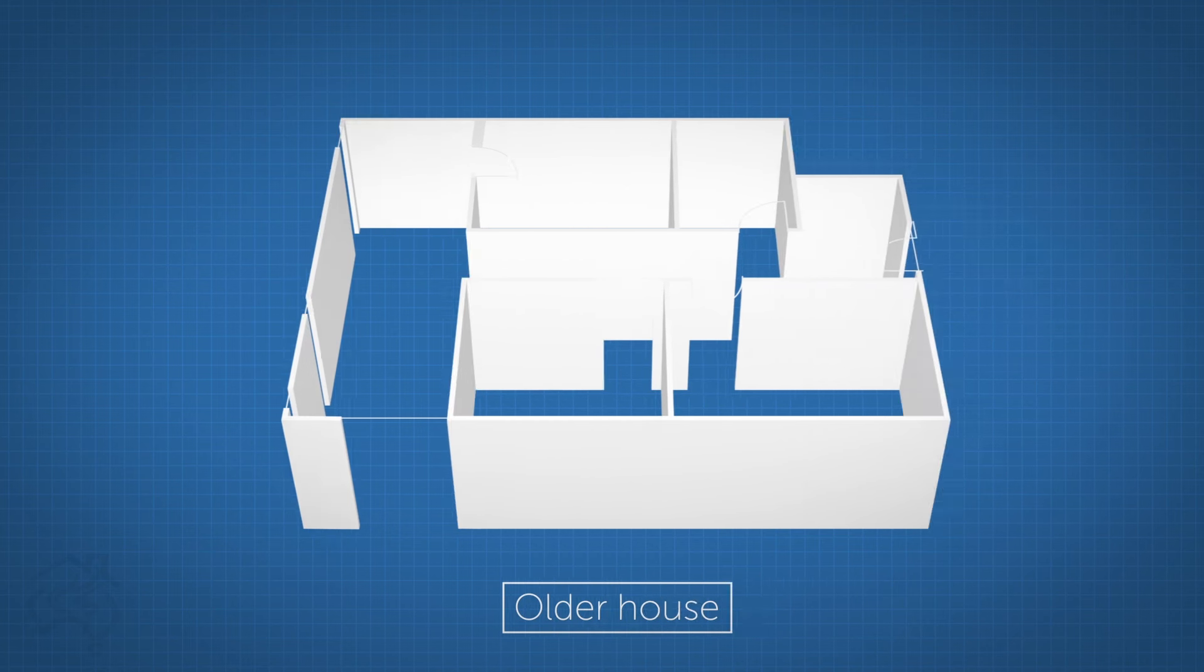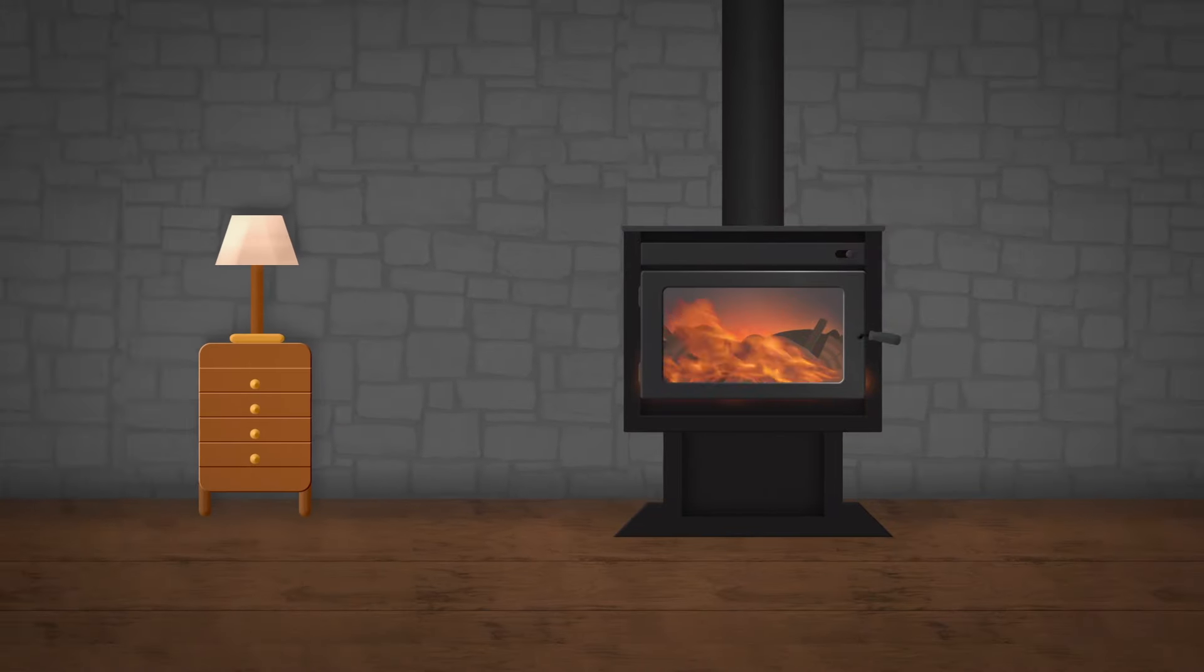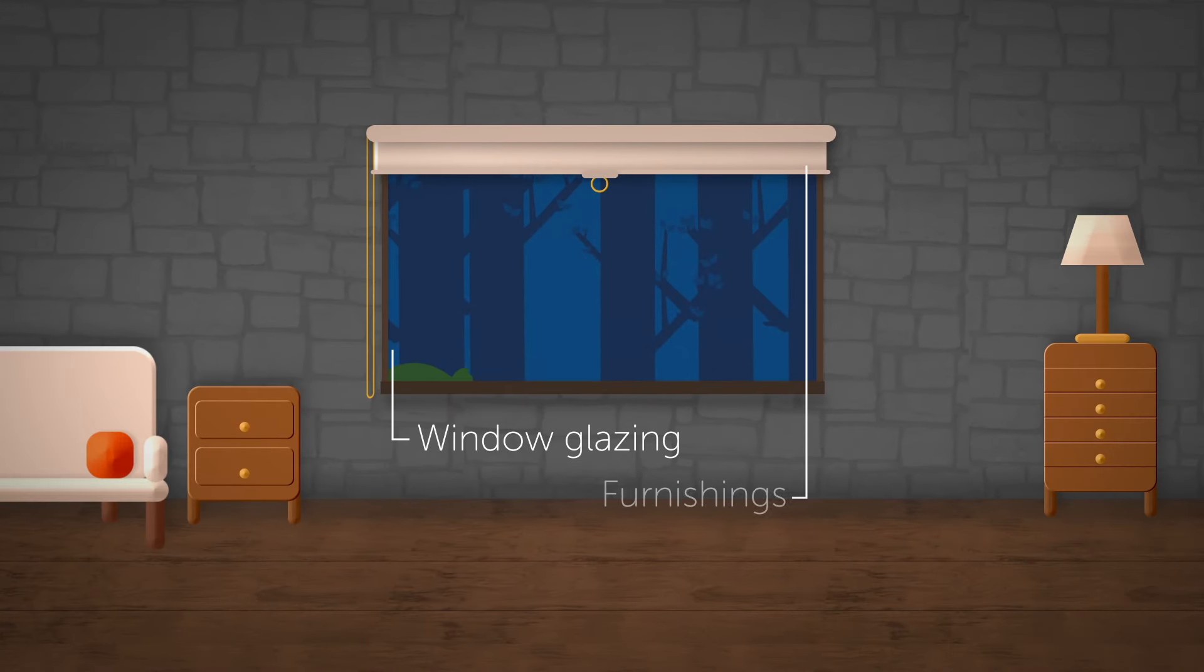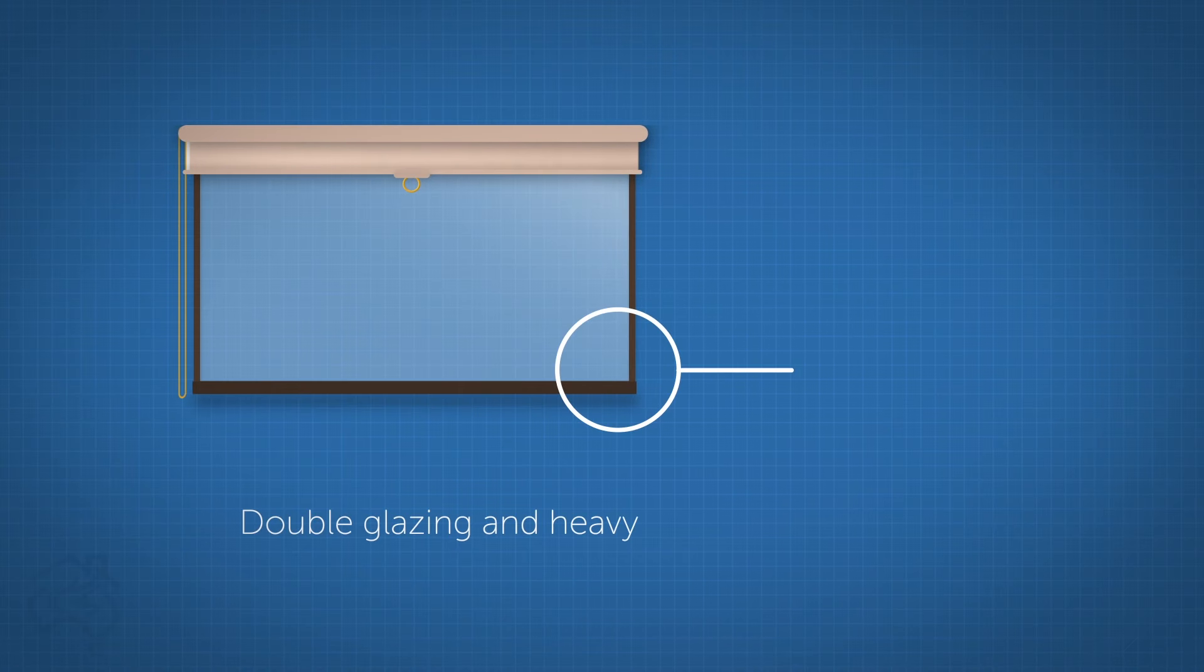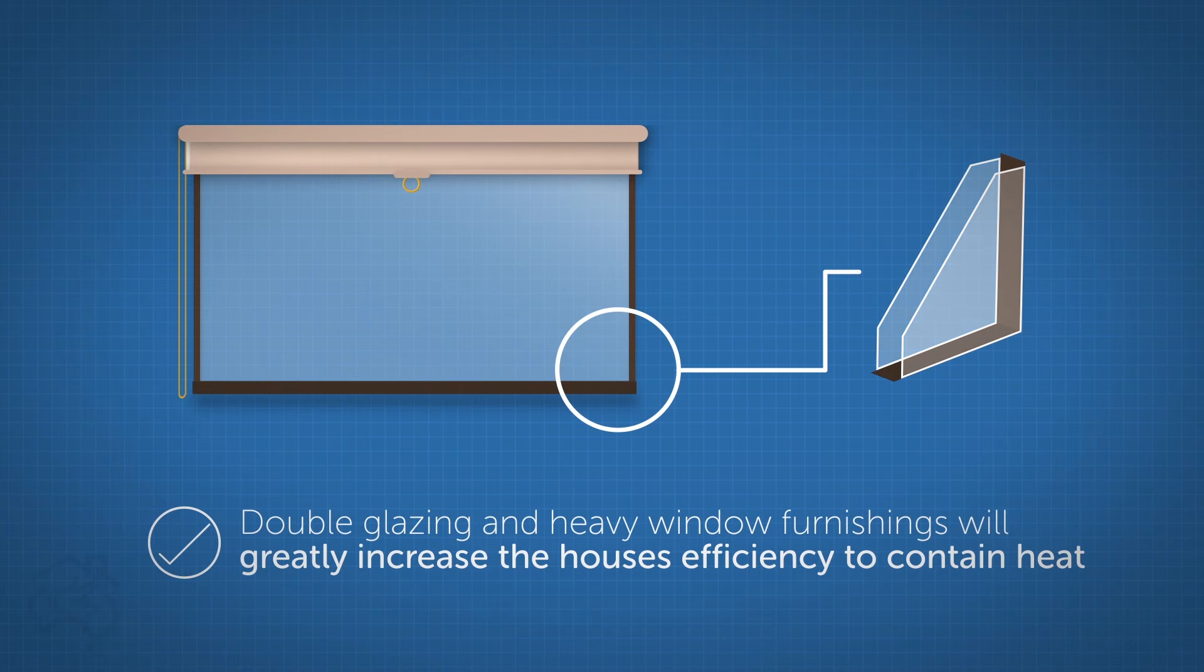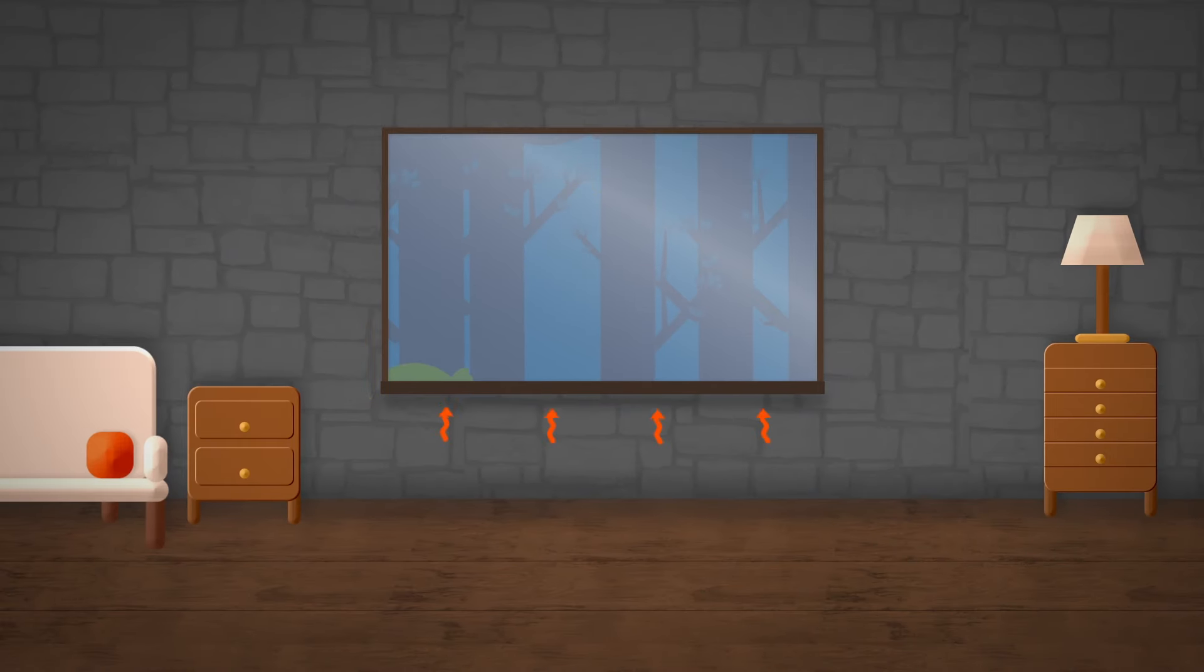However, older style houses can be less insulated causing heat to leak from the house. Window glazing and furnishings are also important to calculate the amount of heat loss from the dwelling. Double glazing and heavy window furnishings will greatly increase the house's efficiency to contain heat. Windows without curtains or blinds will leak warmth via heat transfer through the glass.